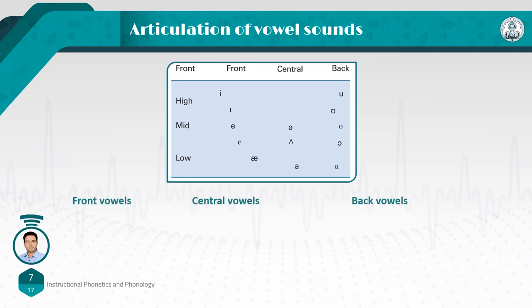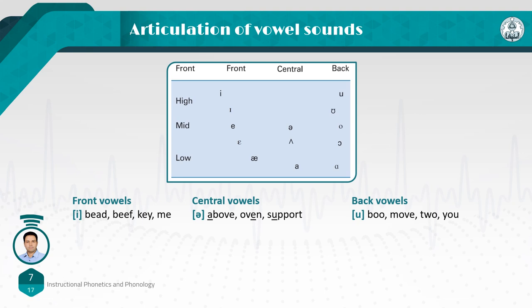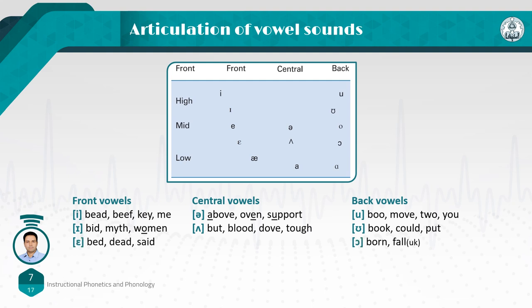For front vowels, an example is 'beat,' 'beef,' 'key,' or 'me' — all examples of the vowel 'ee,' which is a high front vowel. The next front vowel is 'I,' as in 'bit,' 'myth,' or 'women.' 'A' is another front vowel, as in 'bed,' 'dead,' or 'said.' And 'aa' is the next front vowel, as in 'bad,' 'laugh,' or 'rap.'